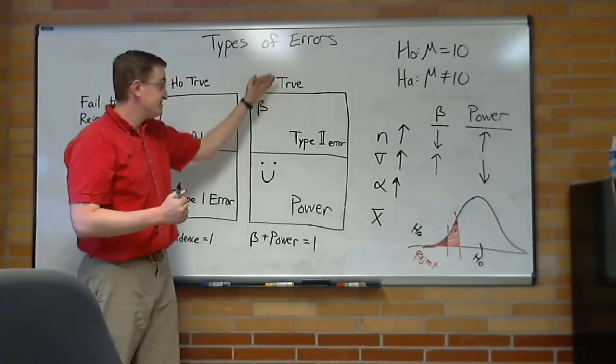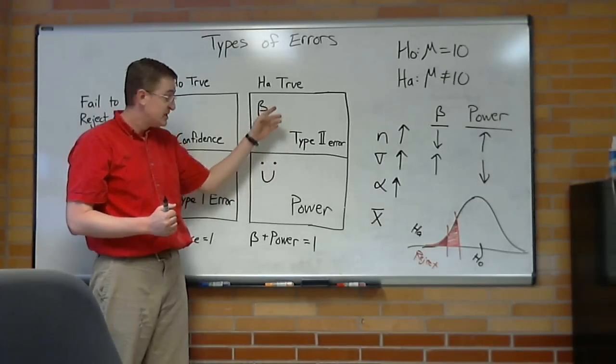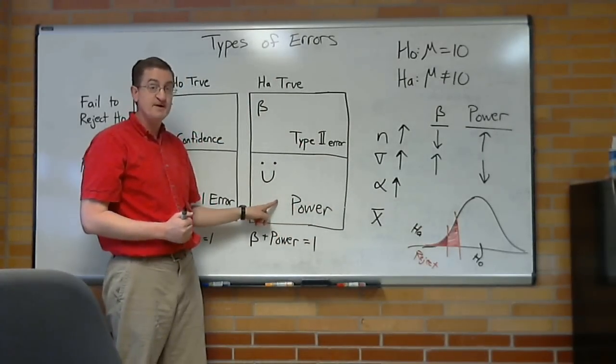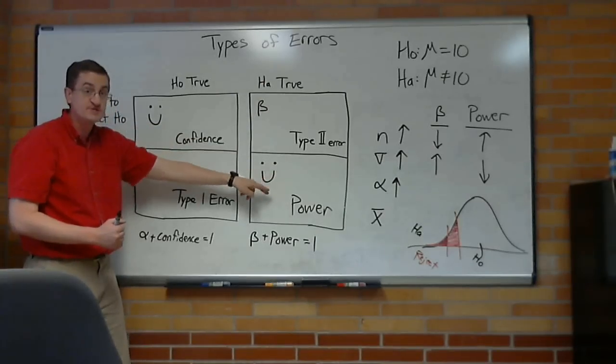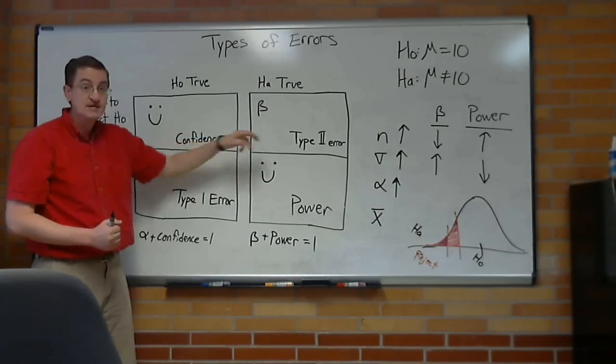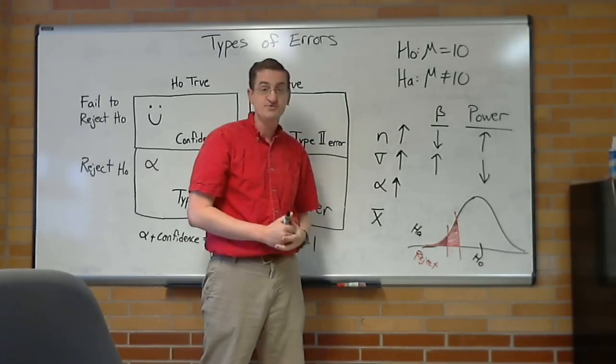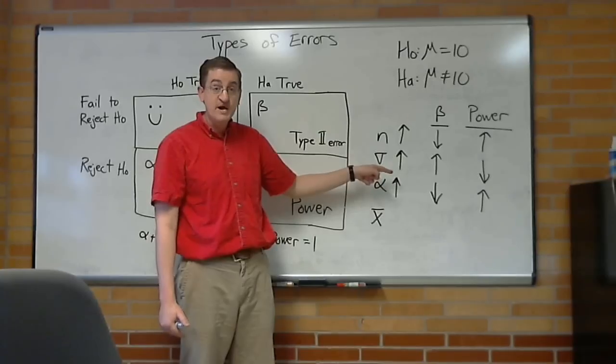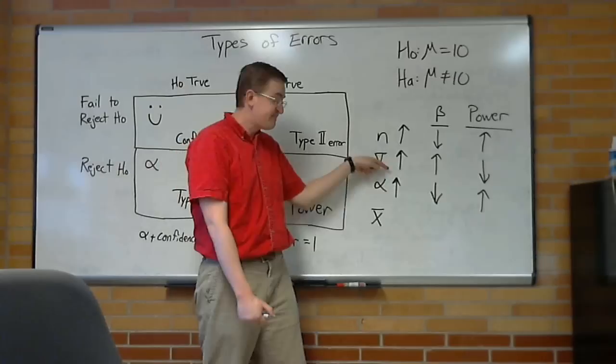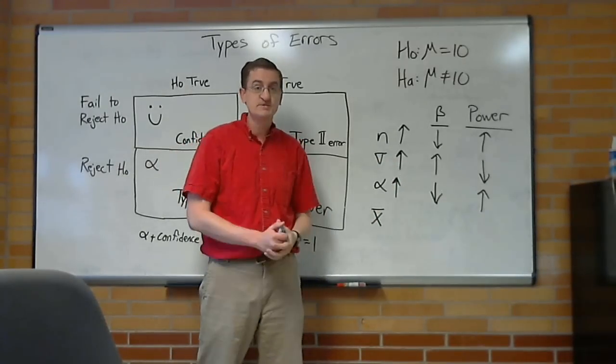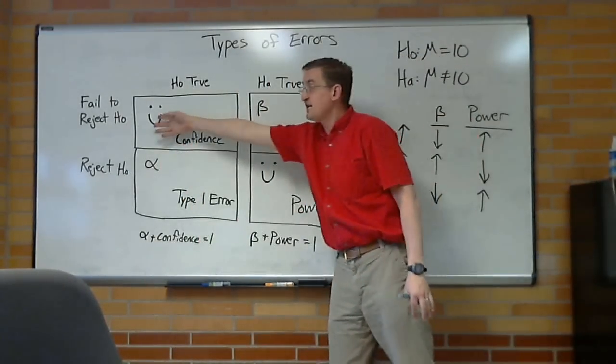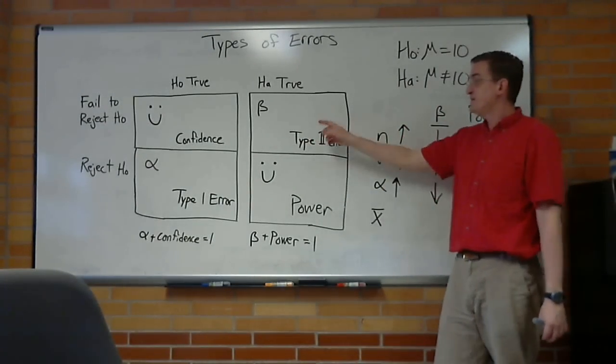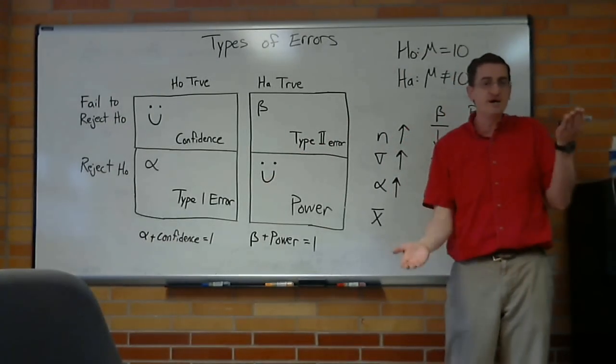In this case, that's a good thing, because we're working in the universe where the alternative is true. So if we're going to talk about power, I've just made it more likely for me to reject. That's going to increase my power, because rejecting is the right thing to do in this universe. And my beta will go down because I'm less likely to fail to reject, because I've got more of a rejection region. And this is the difficult trade-off between alpha and beta. If I want my beta to go down, I can put my alpha up. But then I have more type 1 error. If I make my type 1 error smaller, then my type 2 error goes up. And the reason is you're changing the line. If I say I'm going to fail to reject more, well, you're going to make more type 2 errors. If I say I'm going to reject more, I'm going to make more type 1 errors. So there's this trade-off between alpha and beta.